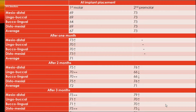Looking at the resonance frequency analysis measurements for both implants: the first molar, which was immediately loaded, had an average ISQ of 67, and the second premolar, which was delay-loaded, had an ISQ of 73. After one month, the first molar increased to 71. After two months, it increased further to 72, and after three months to 75. The delay-loaded second premolar showed fluctuation — a decrease to 71 after two months — before returning to its original reading of 73.